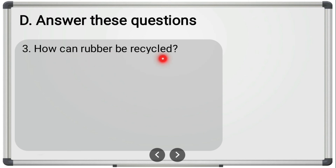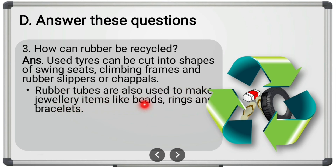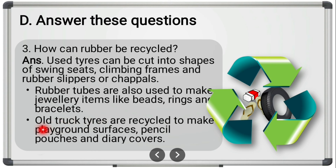Third long answer question: 'How can rubber be recycled?' Used tires can be cut into shapes of swing seats, climbing frames, rubber sleepers, or chappals. Rubber tubes are also used to make jewelry items like beads, rings, and bracelets. Old truck tires are recycled to make playground surfaces, pencil pouches, and diary covers.